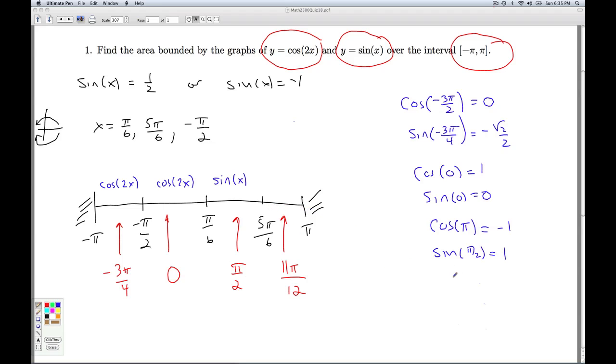Finally, we're looking between 5 pi over 6 and pi. I plug in 11 pi over 12. Multiply that by 2. I'm looking at the cosine of 11 pi over 6. The cosine of 11 pi over 6 is square root 3 over 2. I plug 11 pi over 12 in the sine. I get the sine of 11 pi over 12. And the question is, how does that compare to square root 3 over 2? We could use a half-angle formula if we wanted to, or I can just think about the sine. 11 pi over 12 is just shy of pi.